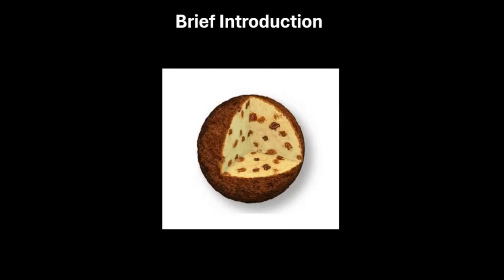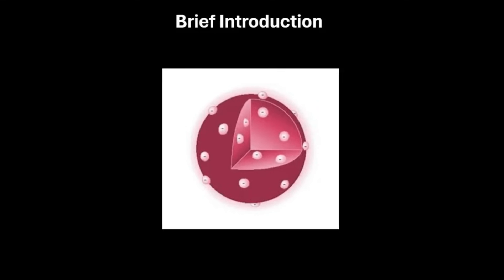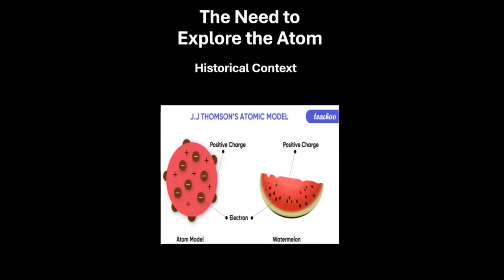According to this model, the atom was thought to be composed of diffused positively charged pudding with negatively charged electrons embedded like plums within it. There was no distinct nucleus. This model was later replaced by Rutherford's model, which proposed the existence of a concentrated positively charged nucleus at the atom's center, fundamentally altering our understanding of atomic structure.